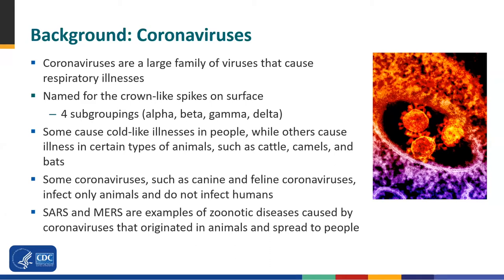To start out, you probably know about coronaviruses — a large family of viruses. There are actually four subgroups: alpha, beta, gamma, and delta. The SARS-CoV-2 that we're dealing with now is a beta subgroup coronavirus.